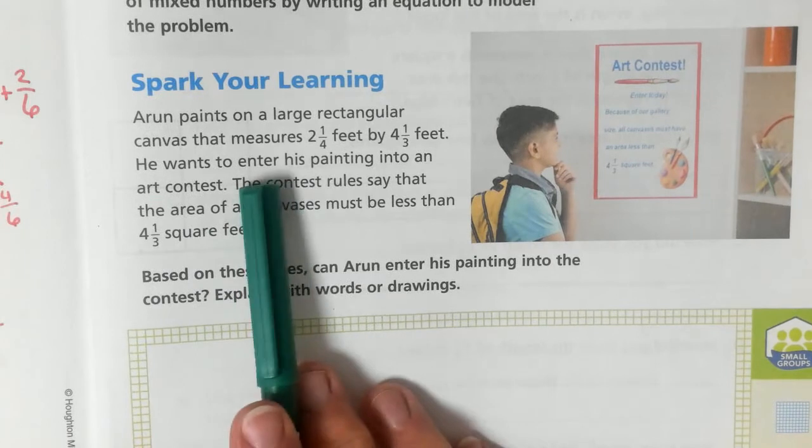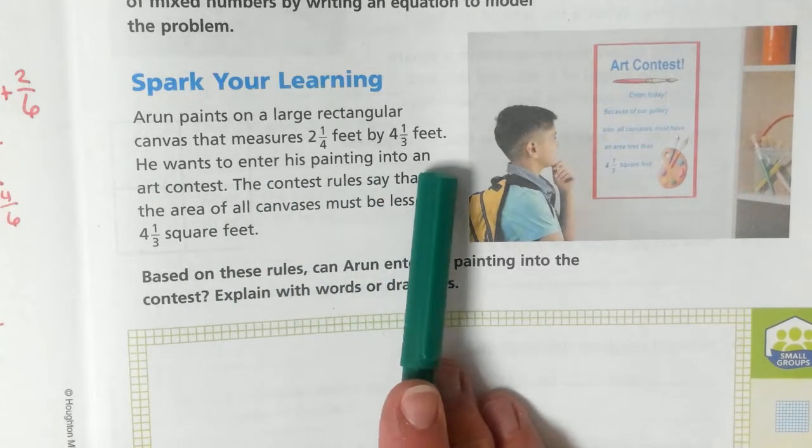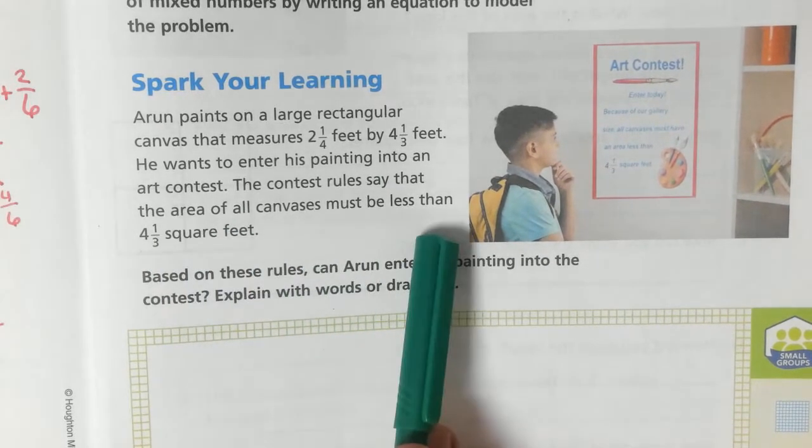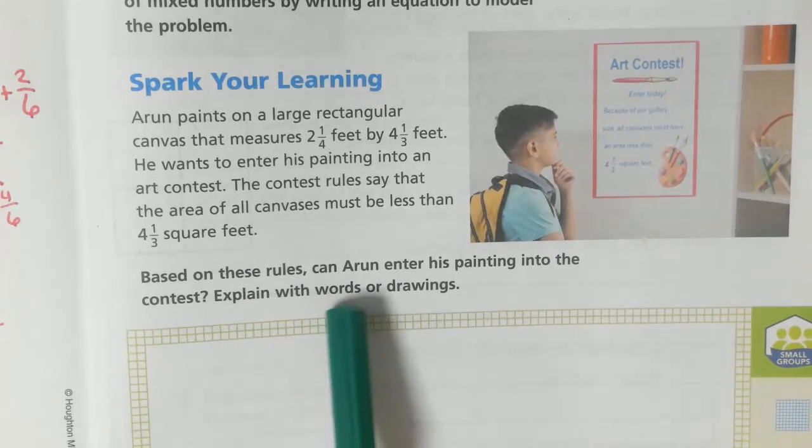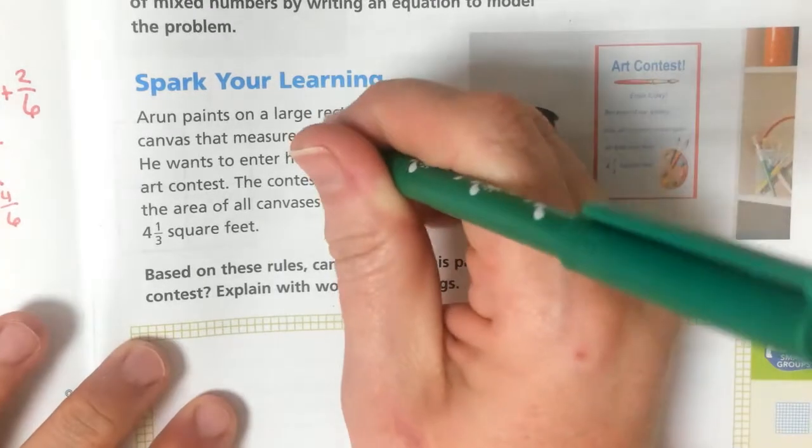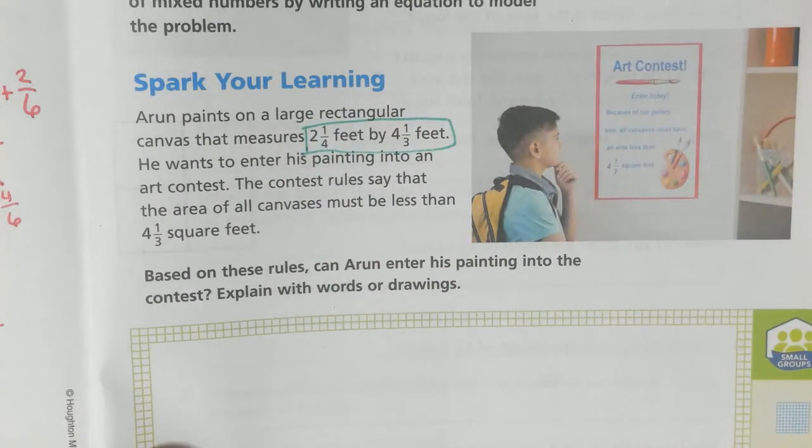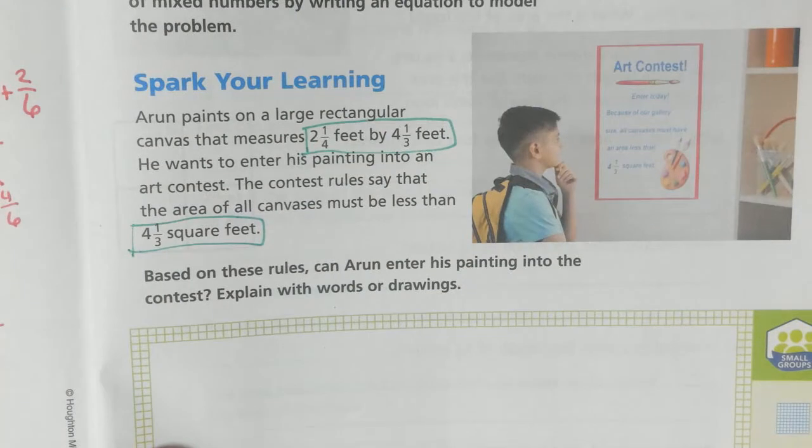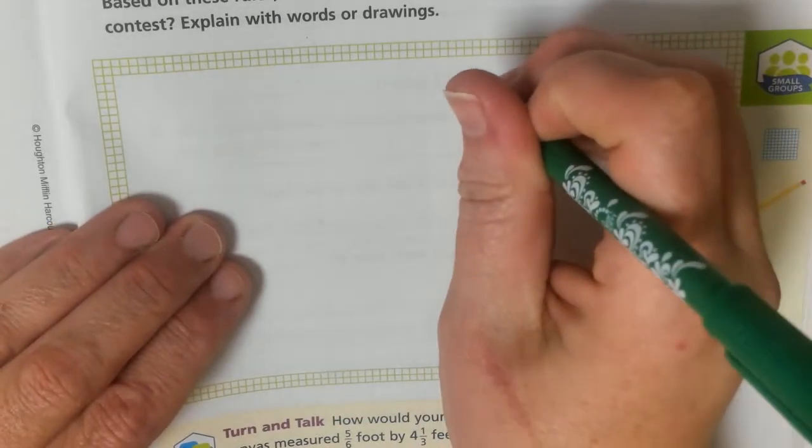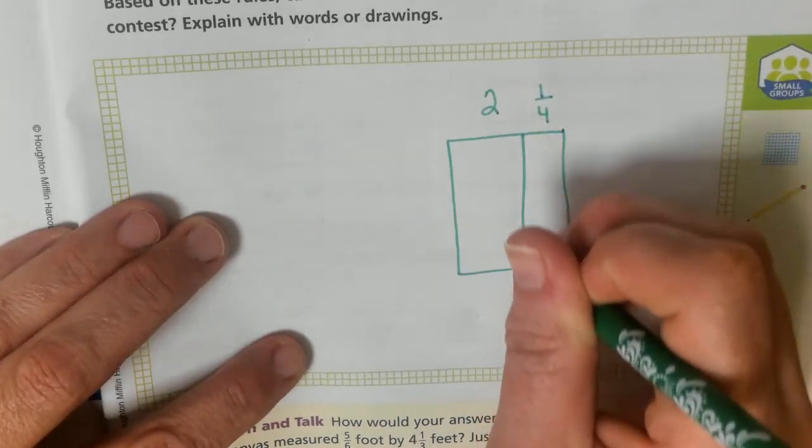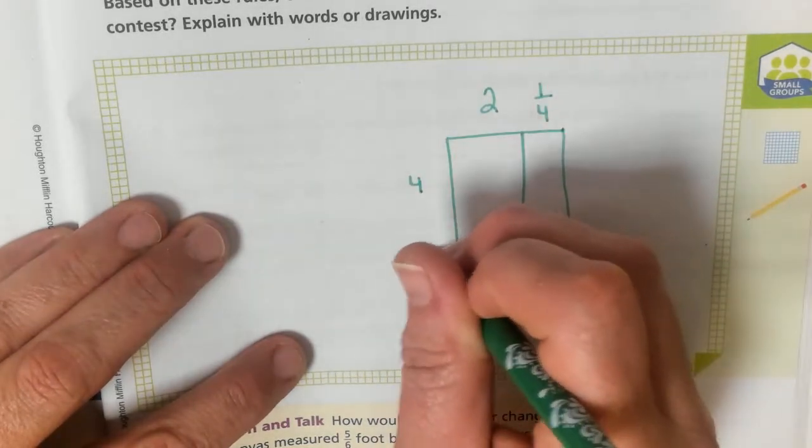Arun paints on a large rectangular canvas that measures 2 1/4 feet by 4 1/3 feet. He wants to enter his painting into an art contest. The contest rules say that the area of all canvases must be less than 4 1/3 square feet. Based on these rules, can Arun enter his painting into the contest? Explain with words or drawings. So, his canvas is 2 1/4 feet by 4 1/3 feet. It cannot be bigger than 4 1/3 feet. It must be less than that.